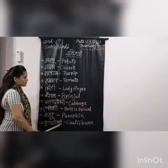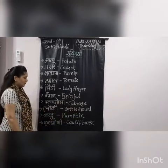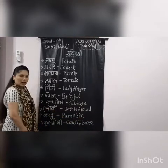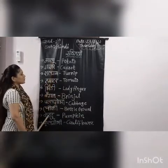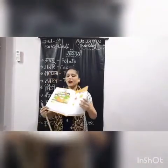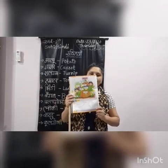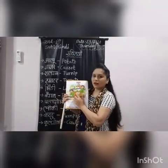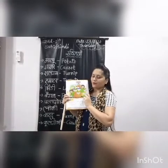Kaddu — kaddu ko hum English mein bolenge pumpkin. Phool gobi ko hum English mein bolenge cauliflower. Understood all of you? इस सारी सब्जियों के नाम आपको हिंदी और English दोनों में आने चाहिए। अब आपकी textbook में आप देखोगे, तो वहाँ पे आपको already सारी सब्जियों के नाम picture के साथ दिखाए हुए हैं। तो आपको इन सारी सब्जियों के नाम याद करने हैं और यहाँ से देखके उसकी reading भी आनी चाहिए।